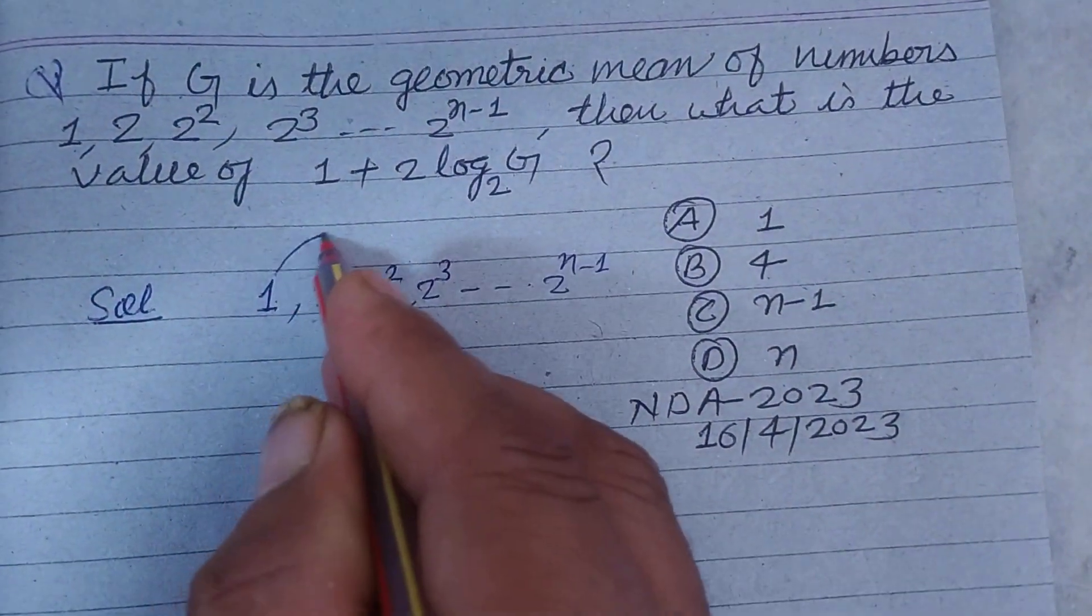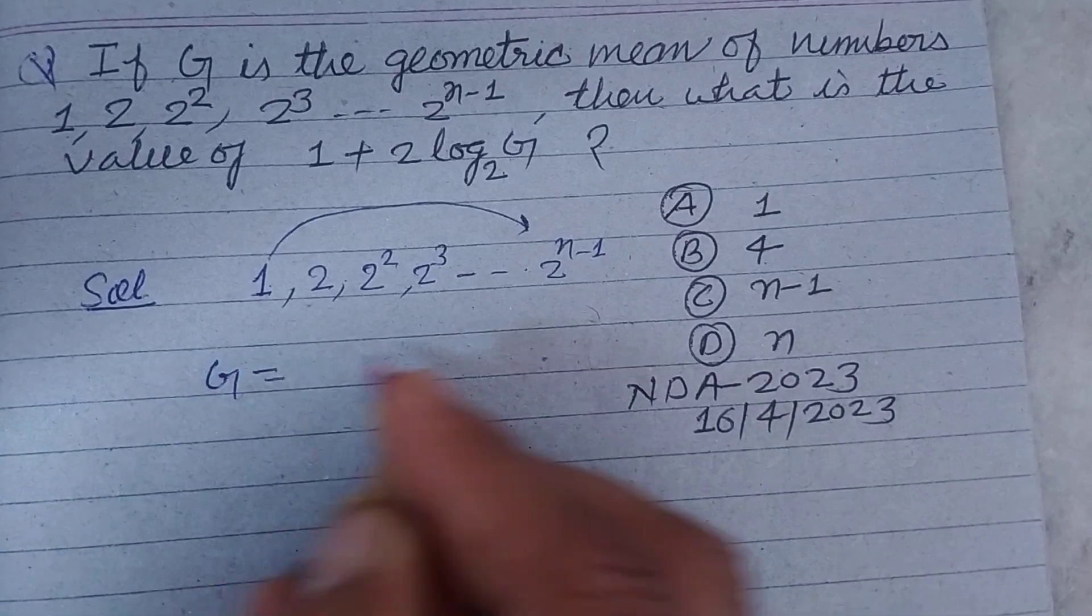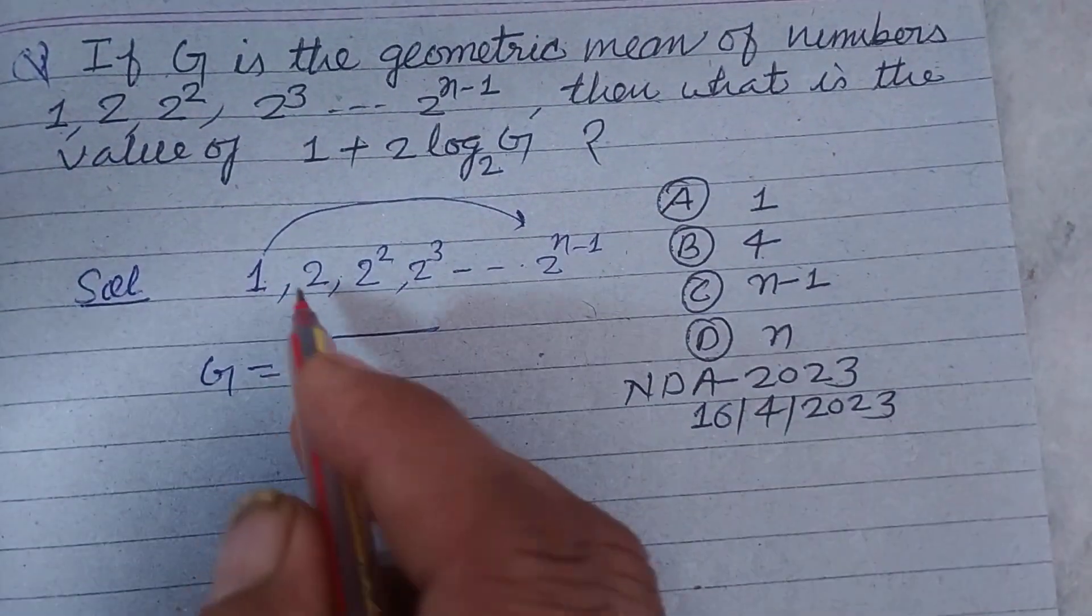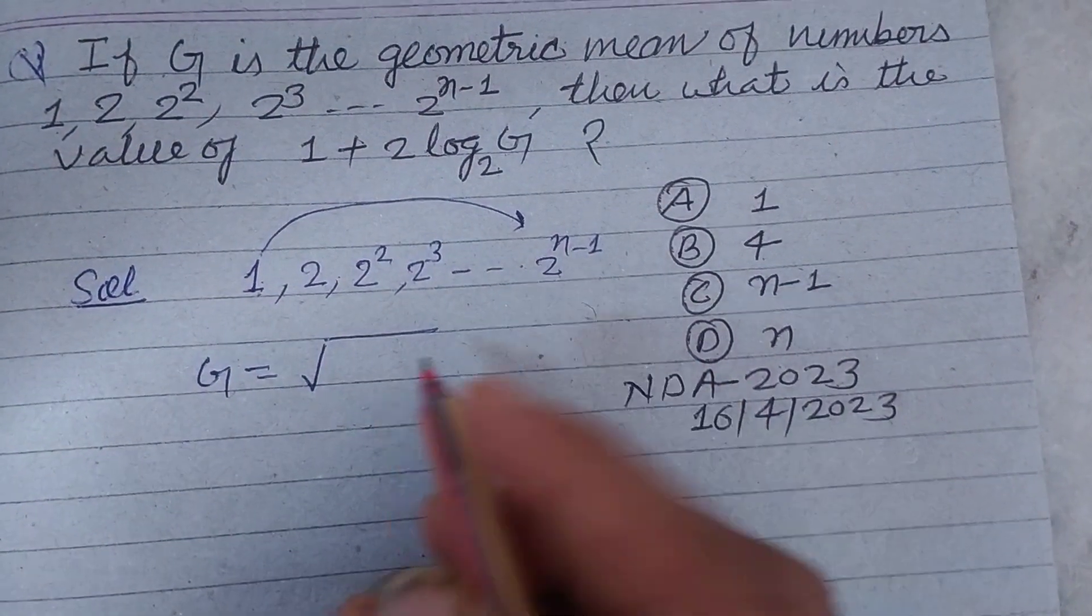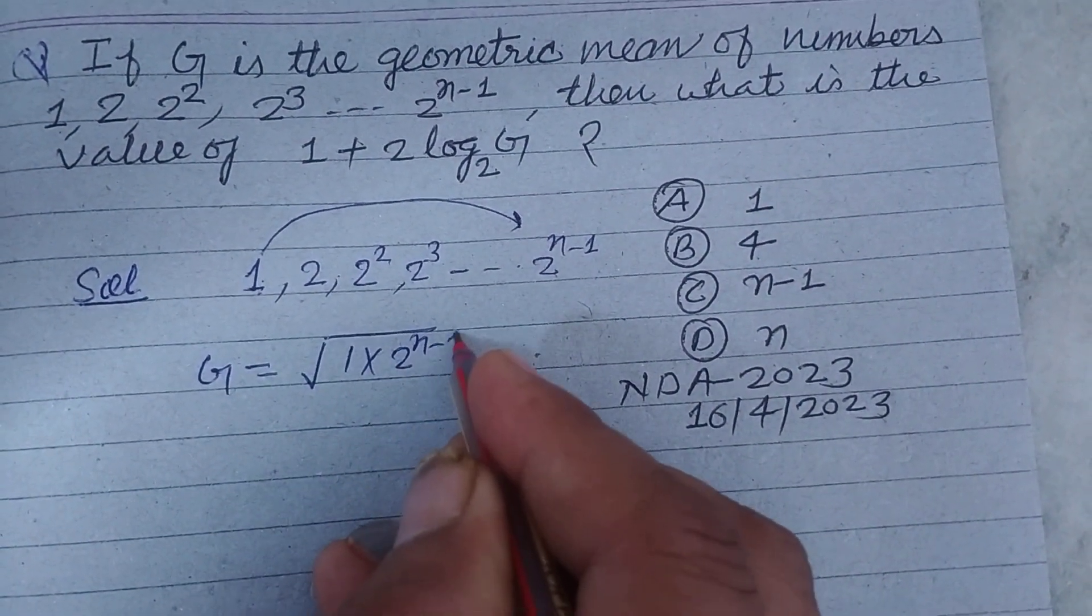So geometric mean between 1 and the last number G equals under root a times b, here a is 1 and b is this, so 1 into 2 to the power n minus 1.